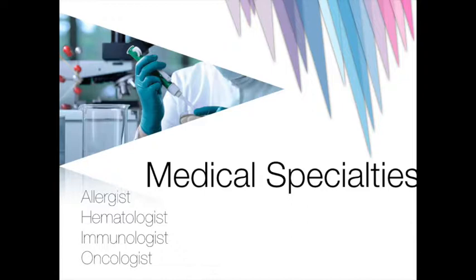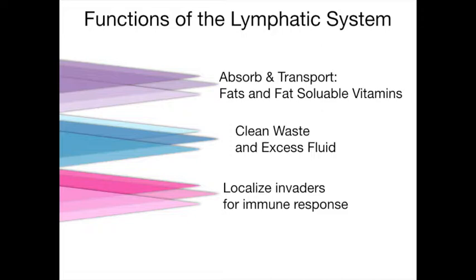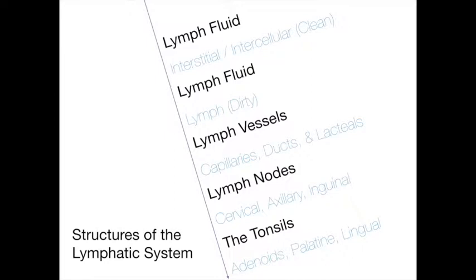The lymphatic system has three primary functions: to absorb fats and fat-soluble vitamins from the digestive system and transport them to the cells, return cellular waste products and excess fluid from the tissues to the circulatory system, and to serve as an important part of the immune system. The major structures include lymph fluid, lymph vessels, lymph nodes, tonsils, spleen, thymus, and lymphocytes, which are specialized white blood cells.